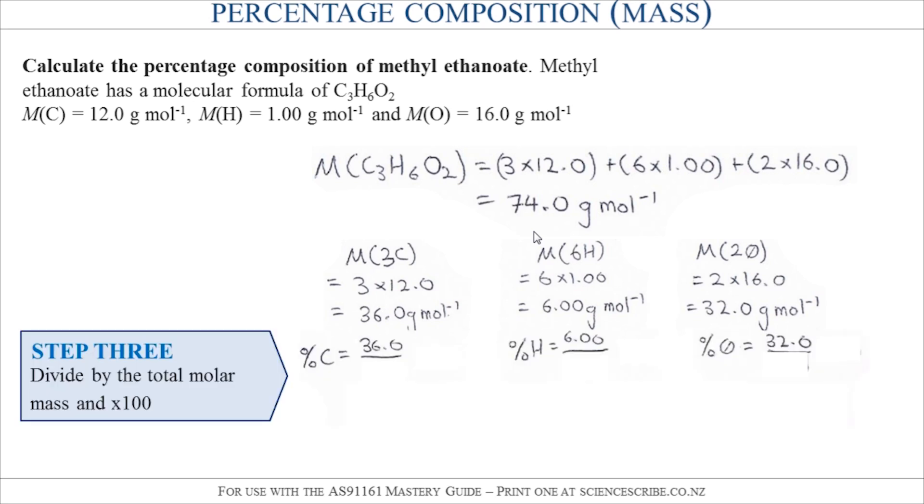Step three is to take each of those numbers we just calculated and to divide it by the total molar mass which is what we calculated in step one. After that, times it by 100 and that gives you your percentage of carbon, hydrogen, and oxygen going across from left to right.